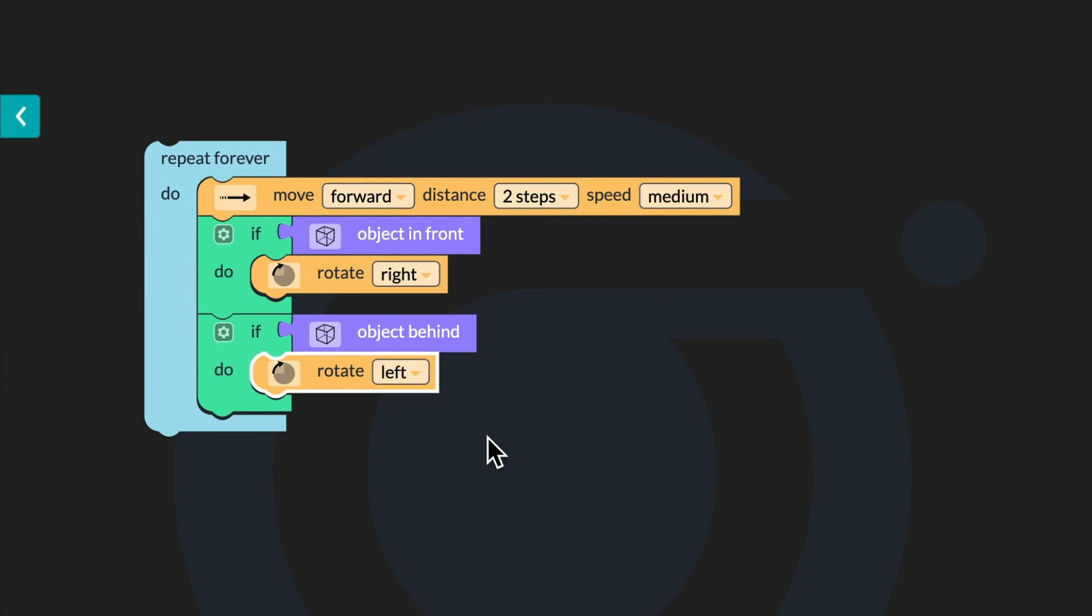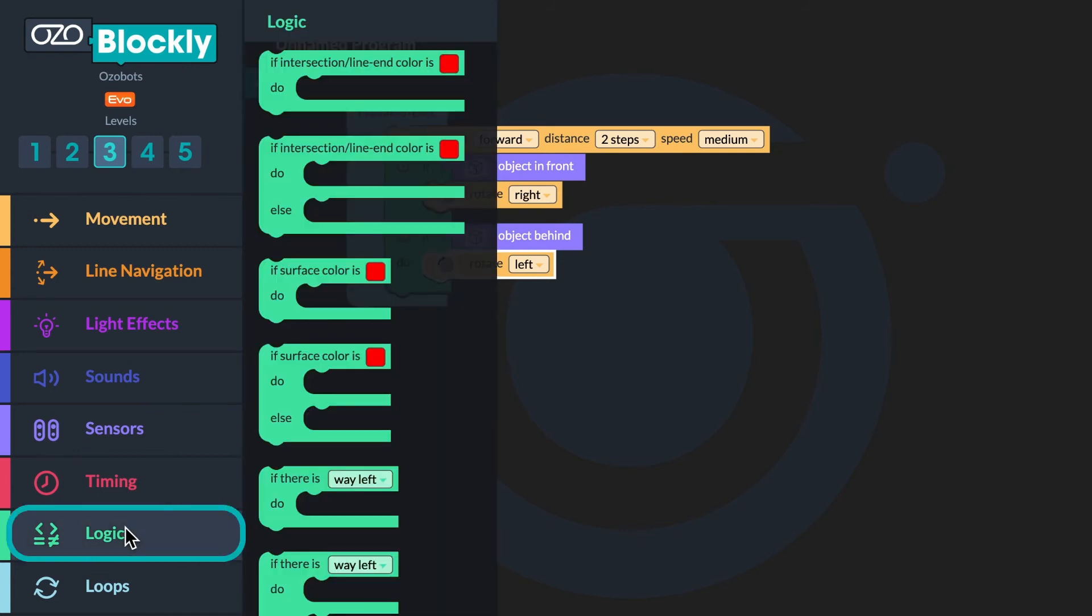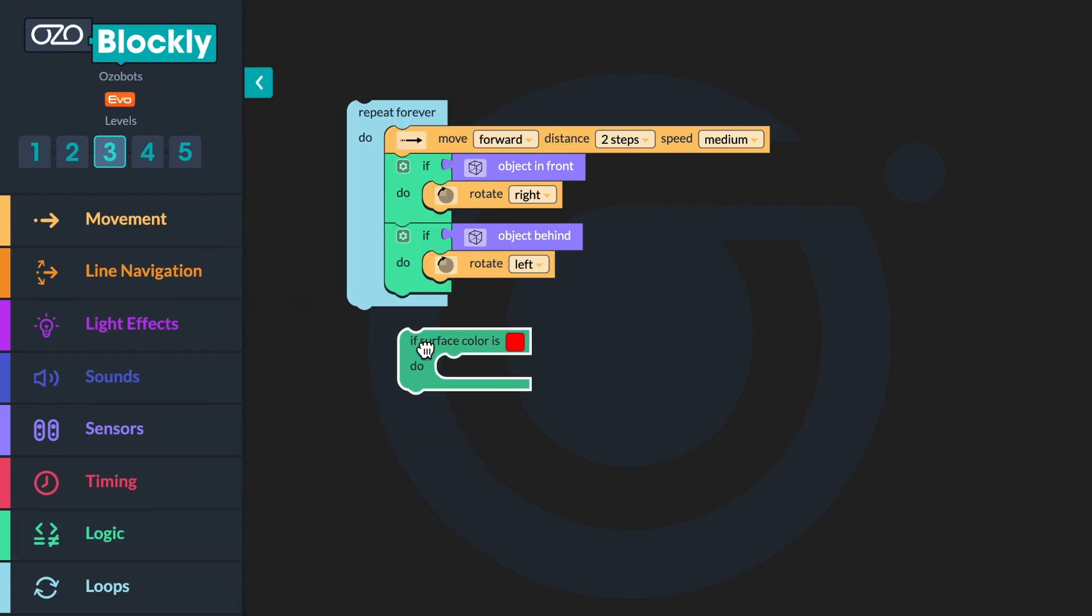Now you will use a variable to program your bot to celebrate when it reaches the end of the maze successfully. Go to Logic in the Block panel. Click If Surface Color Is Do Block and drag it inside the loop below the If object behind Do Block. Then click on the colored box and change it to match the color you used for your finish line.